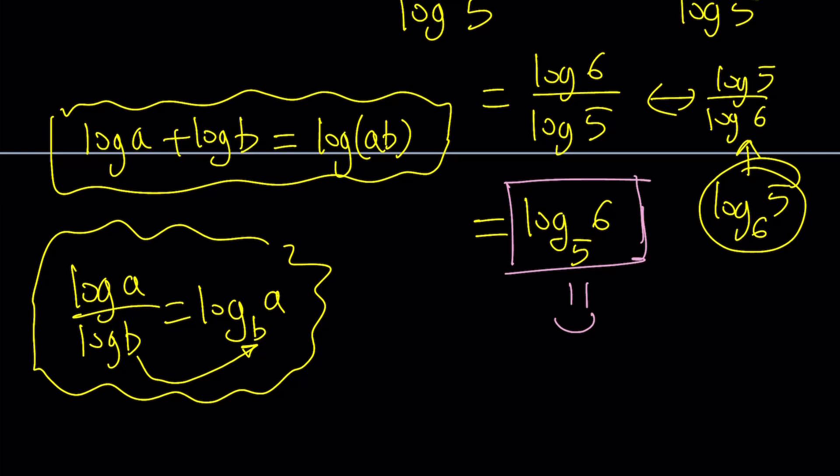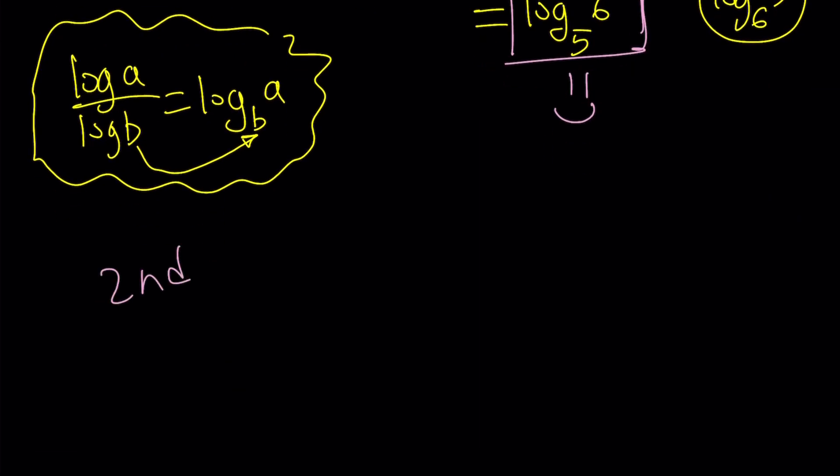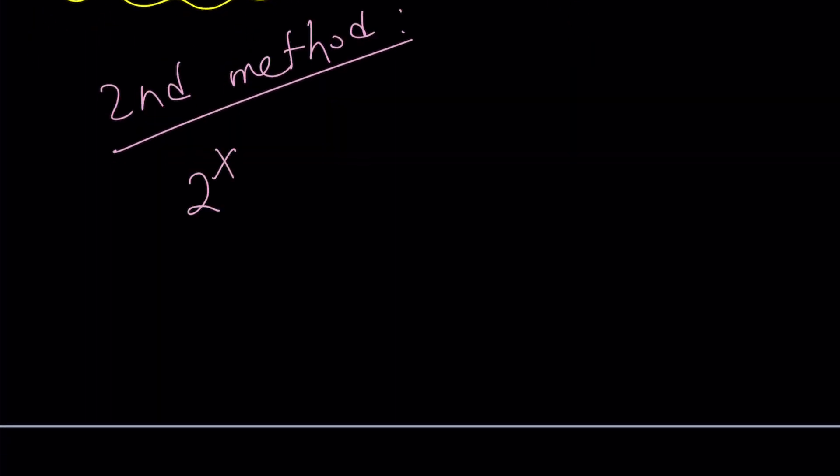Let's continue with the second method. The second method is going to use a slightly different approach. Let's rewrite the problem. 2^x = 3^y = 5^z. And we're supposed to find z/x + z/y. You can take out the z here if you want, or leave it like that. Doesn't matter.